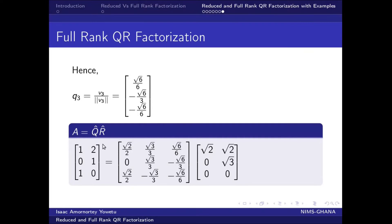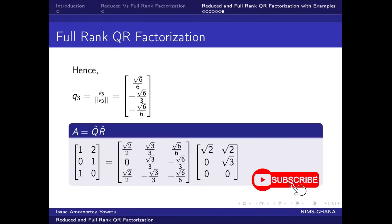In conclusion, our 3 by 2 matrix A can be decomposed as a 3 by 3 Q matrix and a 3 by 2 R matrix, where R contains our 2 by 2 upper triangular part padded with zeros. This brings us to the end of this lesson on full rank and reduced rank QR factorization. If this video was helpful, please don't forget to subscribe, like, share, and leave your comment below. Thank you.